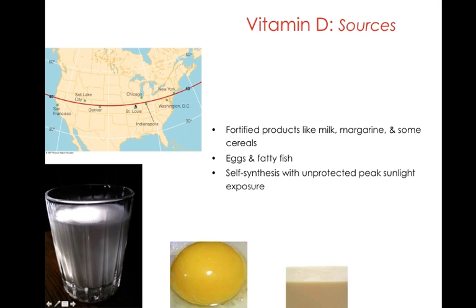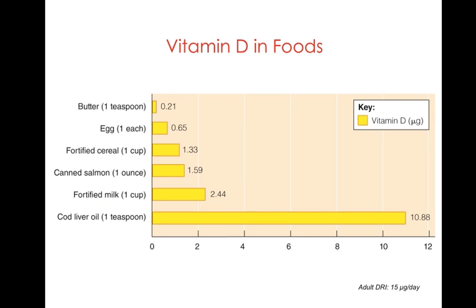Folks that live below the 40th parallel can get adequate vitamin D from sun exposure — about 20 minutes a day. However, above the 40th parallel, where you're sitting right now, you don't get adequate exposure from the sun, particularly between the months of September and March. So you need to drink your milk. Cod liver oil would certainly provide lots of vitamin D as well.